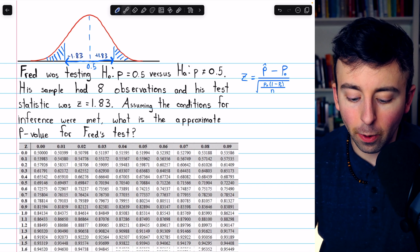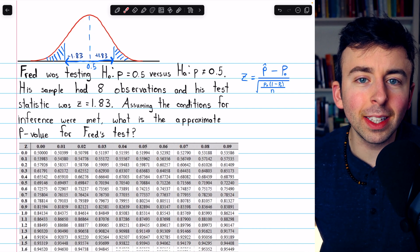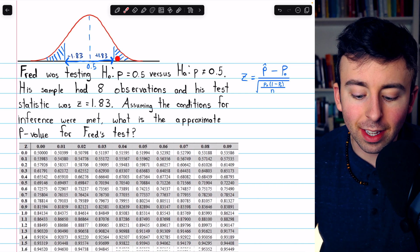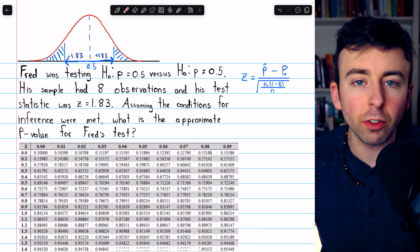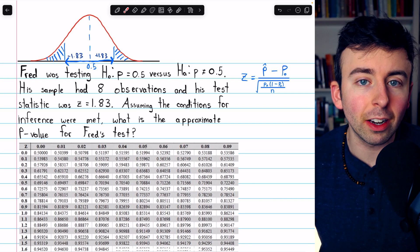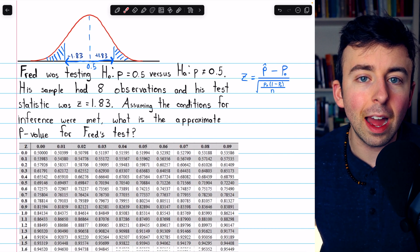This is coming from our test statistic, so we're wondering what's the probability that we would get a sample proportion this extreme, either in the positive direction or in the negative direction. We need to consider both directions because the alternative hypothesis is just that p is different from 0.5.